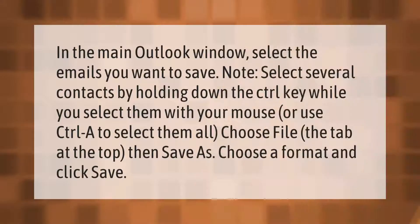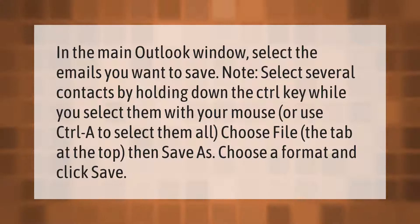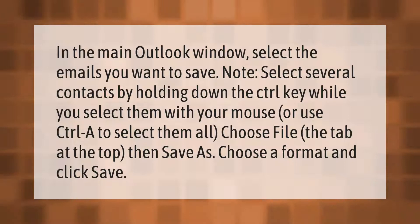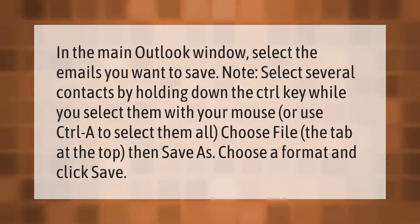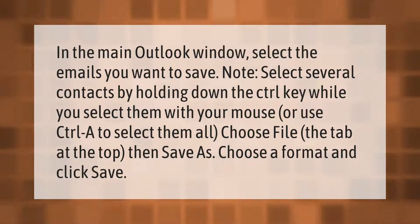In the main Outlook window, select the emails you want to save. You can select several contacts by holding down the Control key while selecting them with your mouse, or use Ctrl+A to select them all. Choose File tab at the top, then Save As. Choose a format and click Save.